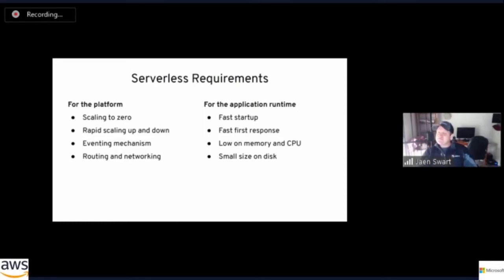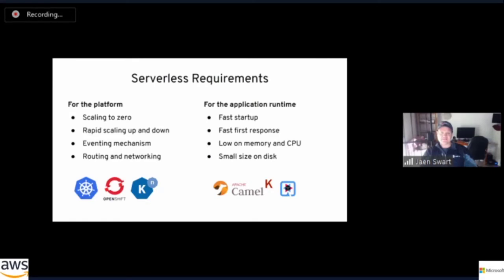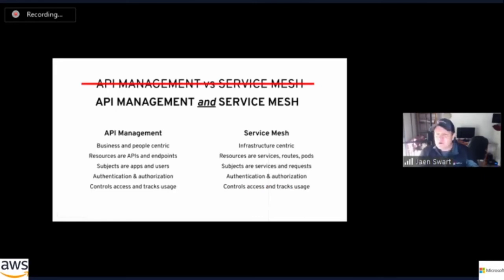When a service scales to zero, it's not live, but when a request comes in it needs to start up and handle that request in a very short amount of time. We also want very low memory and CPU usage — these are cost factors in the cloud — and a small size on disk, important for moving data around and unified storage between clusters. Projects that help on the platform side: Kubernetes, OpenShift, and Knative. On the application runtime side: Camel K and Quarkus.